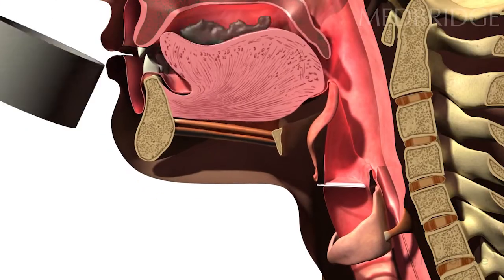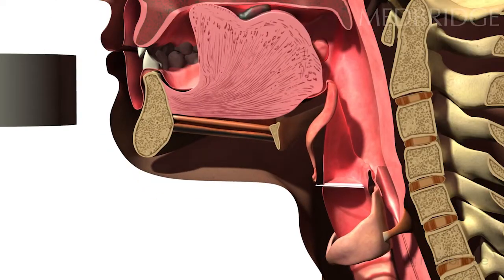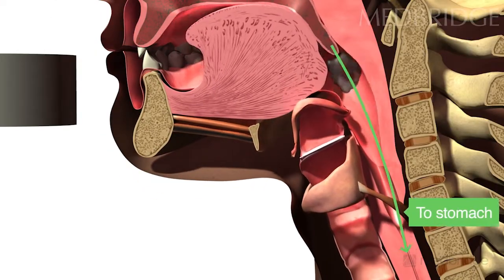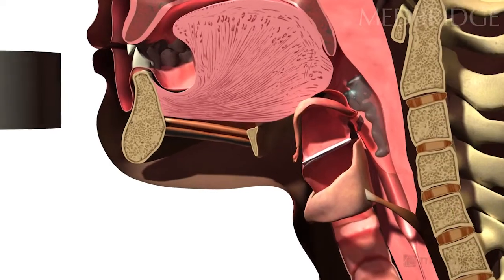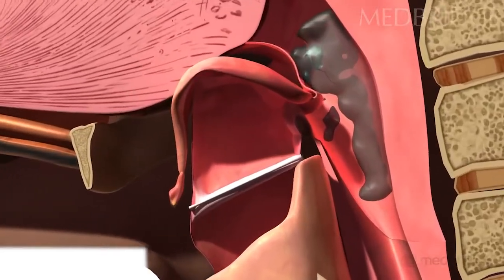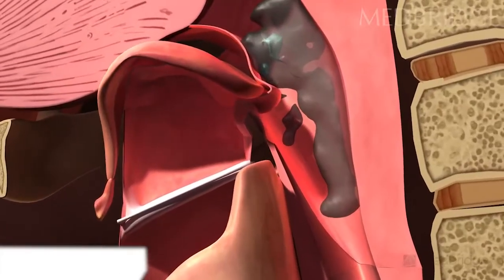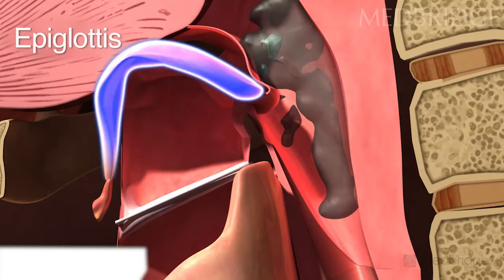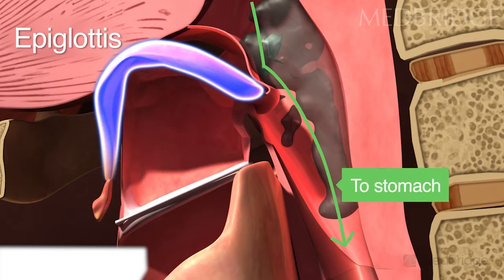Fluid is taken into the mouth and then travels into the esophagus and stomach. During normal swallowing, structures move so that no food or fluid can get into the airway. Notice how the epiglottis folds down completely to keep what is swallowed moving toward the esophagus and away from the windpipe.